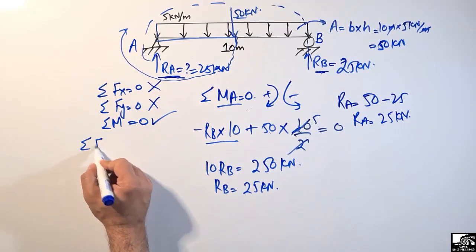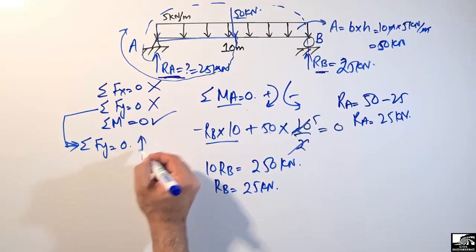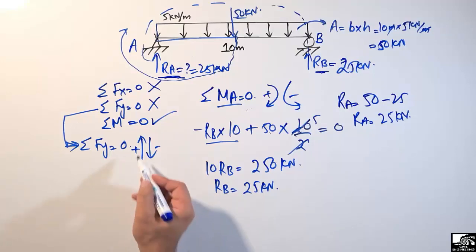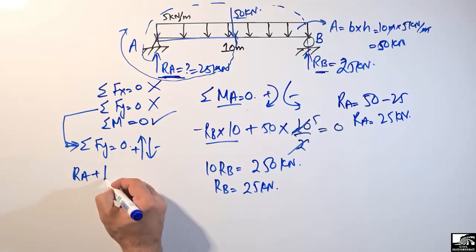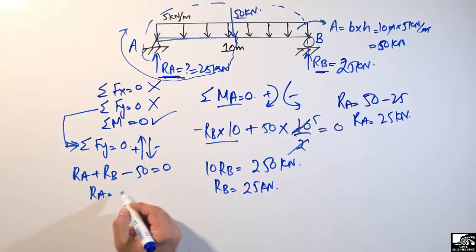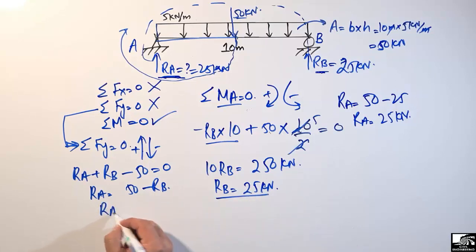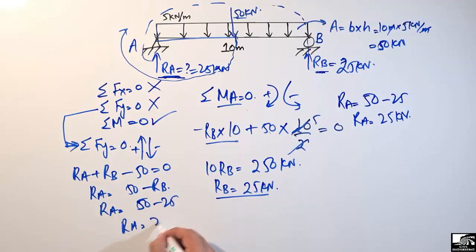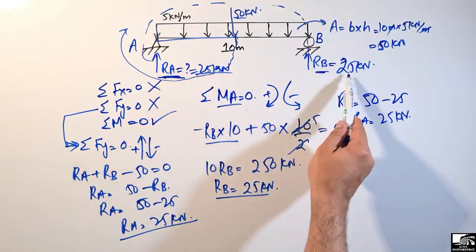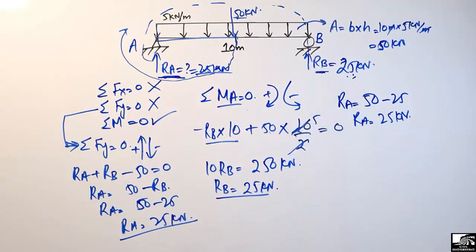We can verify this using the summation of vertical forces equal to zero. Taking upward forces as positive and downward as negative: RA plus RB minus 50 equals zero. Substituting RB equals 25, we get RA equals 50 minus 25, so RA equals 25 kilonewton. The beam is in equilibrium since RA plus RB equals 25 plus 25 equals 50 kilonewton, matching the applied load. Thank you for watching.